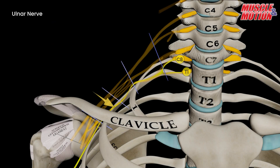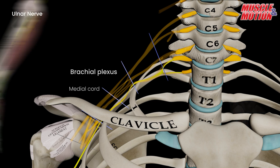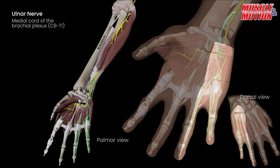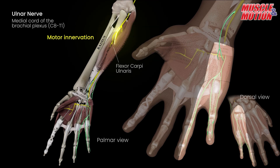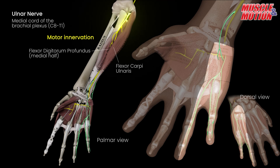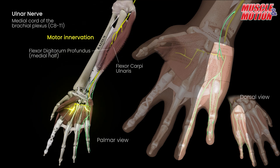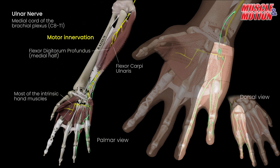In summary, the ulnar nerve arises from the medial cord of the brachial plexus, with root contributions from C8 and T1. It provides motor innervation to the flexor carpi ulnaris, the medial half of the flexor digitorum profundus, and most intrinsic muscles of the hand, as well as sensory supply to the palmar and dorsal aspects of the medial one and a half digits with the adjacent palm.